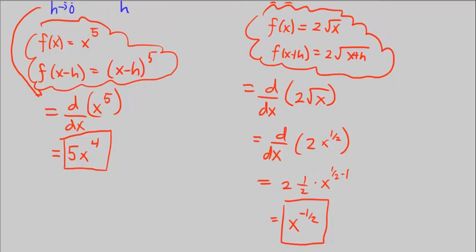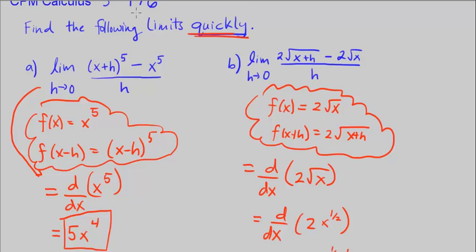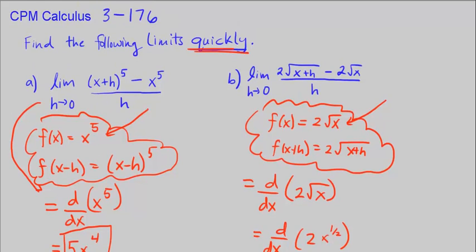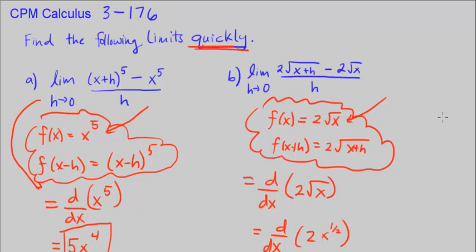is to just go ahead and look at this limit and see, well, this looks like the definition of the derivative with f of x being here x to the 5th and 2 square root of x. All right, this ends CPM Calculus Chapter 3, Number 176.